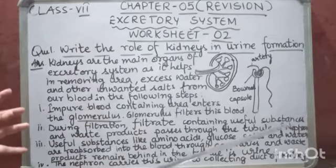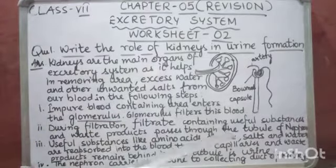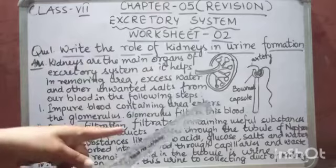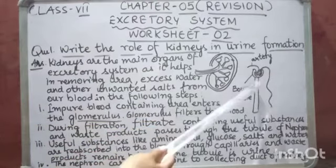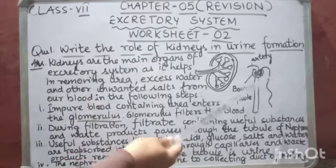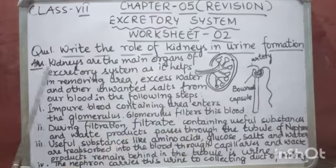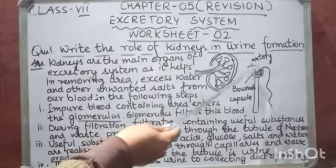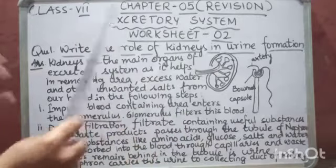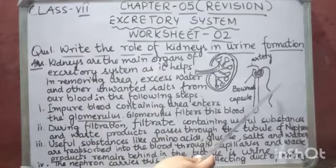There are millions of nephrons present in the kidney, and they help in filtering the blood. So impure blood enters into the glomerulus. You can see here — this is the structure of half of the nephron. This is Bowman's capsule and this is glomerulus. One end of the glomerulus is attached to the artery which carries the impure blood, and the other end of the glomerulus is attached to the veins.